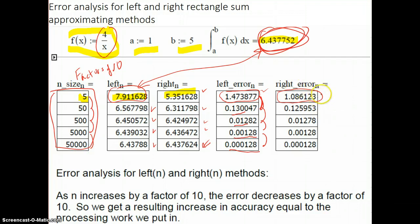And the same thing happens with the right rectangle sums. After you get going here, when you're at 50, you can see that this is 0.126. This is 0.0128, rounds off, 0.00128, 0.000128. So every time you're going down by a factor of 10 when you're increasing your n size by a factor of 10.